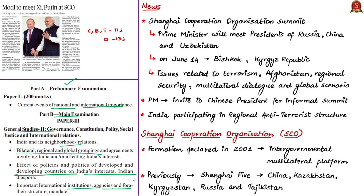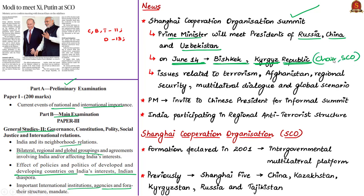This article states that the Indian Prime Minister will meet the presidents of Russia, China and Uzbekistan at the Shanghai Cooperation Organization Summit, to be held on June 14 in Bishkek — the capital of the Kyrgyz Republic, which is the current chair of the SCO. This will be the first multilateral meeting of the Indian Prime Minister after his re-election in the Lok Sabha election. Various issues such as terrorism, Afghanistan, regional security, multilateral dialogues and the global scenario are to be discussed.